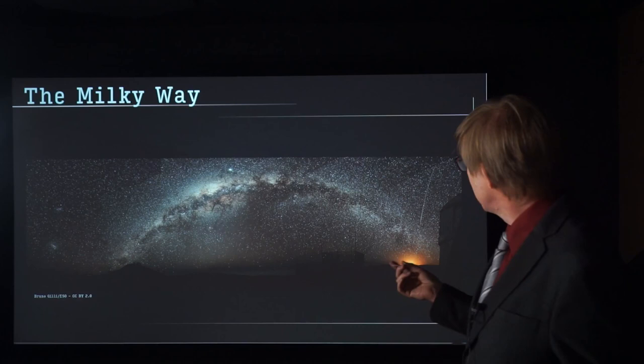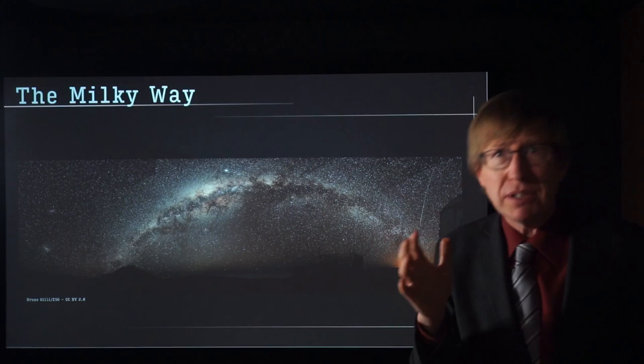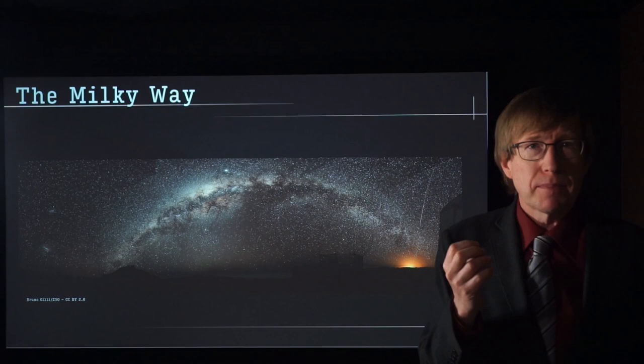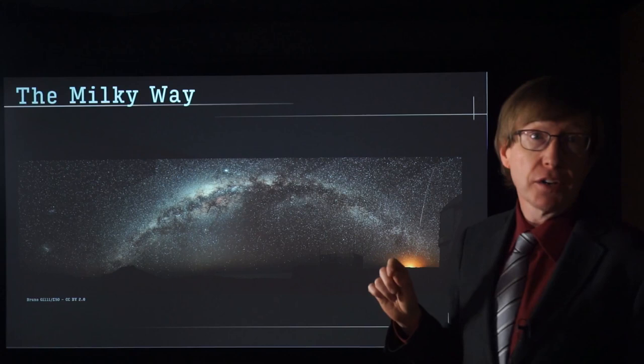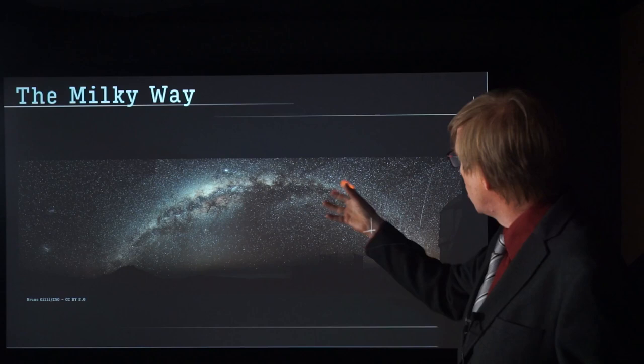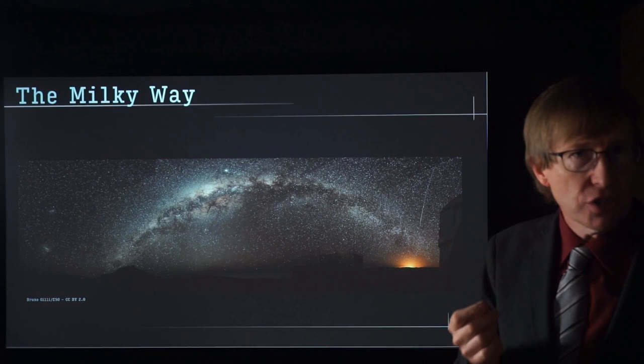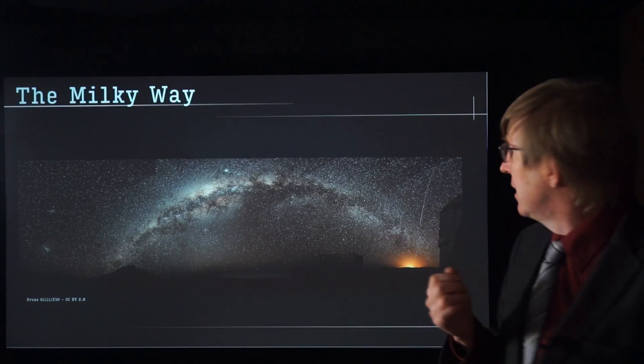Have you ever been out at night and seen the Milky Way? It's an absolutely astounding sight. If you've never been outside the city on a dark night, let your eyes dark-adapt and look up at the sky — I really encourage you to. What you see is this band going across the sky of stars. It looks like a cloud, like dust, but it's not. That glowing is individual stars — 100 billion individual stars glowing, forming what looks like a cloud.